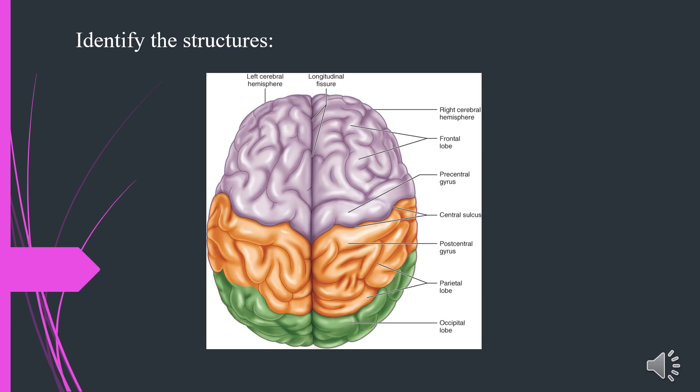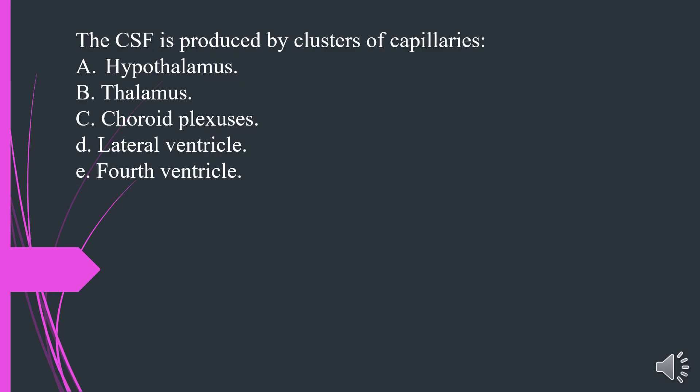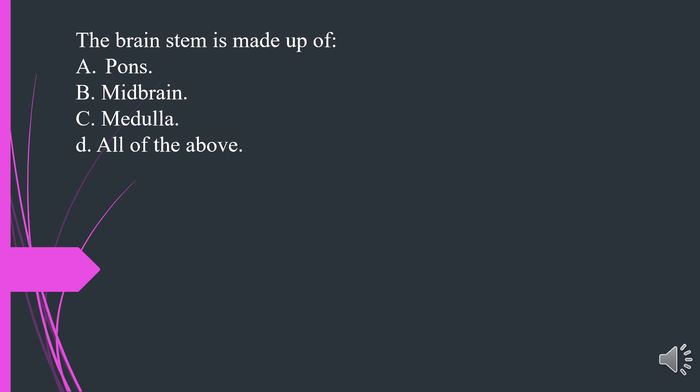The CSF is produced by clusters of capillaries called: A. Hypothalamus. B. Thalamus. C. Choroid plexuses. D. Lateral ventricle. E. Fourth ventricle. The answer is C. Choroid plexuses. The brain stem is made up of: A. Pons. B. Midbrain. C. Medulla. D. All of the above. The answer is D. All of the above.